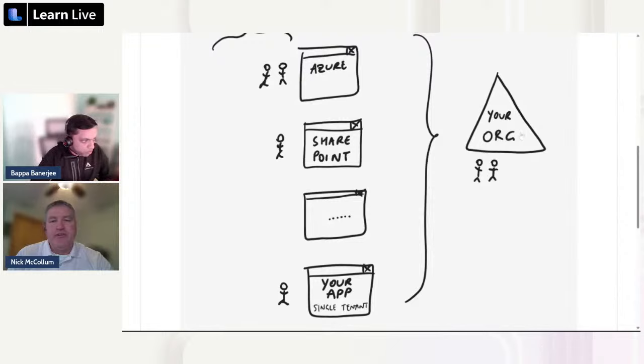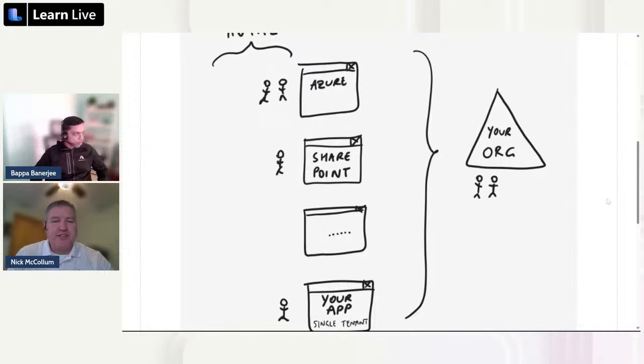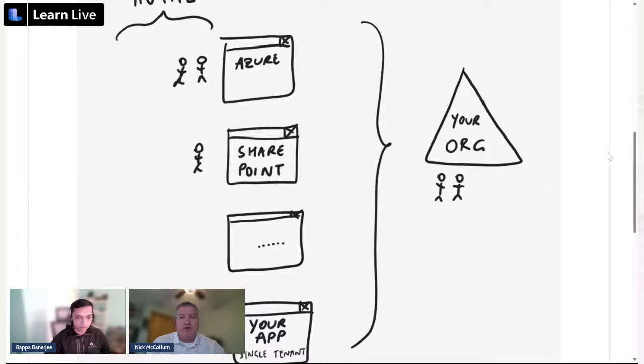The glue that binds your application to Azure Active Directory is known as an application registration. The app registration defines your permissions for which resources that application can access, what type of application it is, and which approach or user flow it will use to communicate and authenticate the user with the directory. My colleague Bapa is going to do a demonstration on how we create an app registration and then how we authenticate an application or user against it.